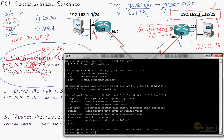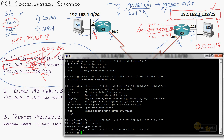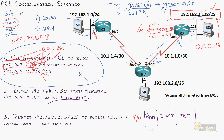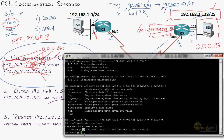Extended access lists can get pretty complex. The biggest thing you can do is remember the three key pieces: permit or deny, the protocol, the source, and the destination. No matter how complex this gets, you're always going to break it into those three pieces. You pick the protocol — in this case IP. This is our source. This is our destination.